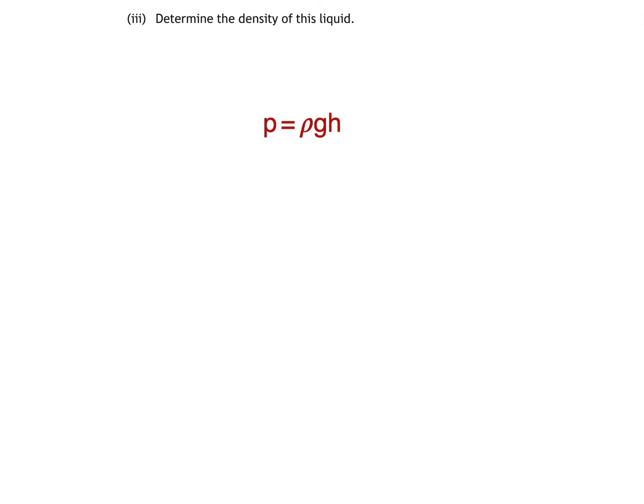Here's b part three, which asks us to determine the density of the liquid. Each new part of the question tends to rely on the answer to the previous part. Here's the equation P = ρgh, and here's the equation of a straight line: y = mx + c. In our graph we plotted pressure p on the y axis and depth h on the x axis, which means ρg is the gradient of the graph, since ρg is multiplied by h, just as gradient m is multiplied by x. The graph would pass through the origin, so the value of c — the y axis intercept — is zero, which is why there's no additional term in the equation.